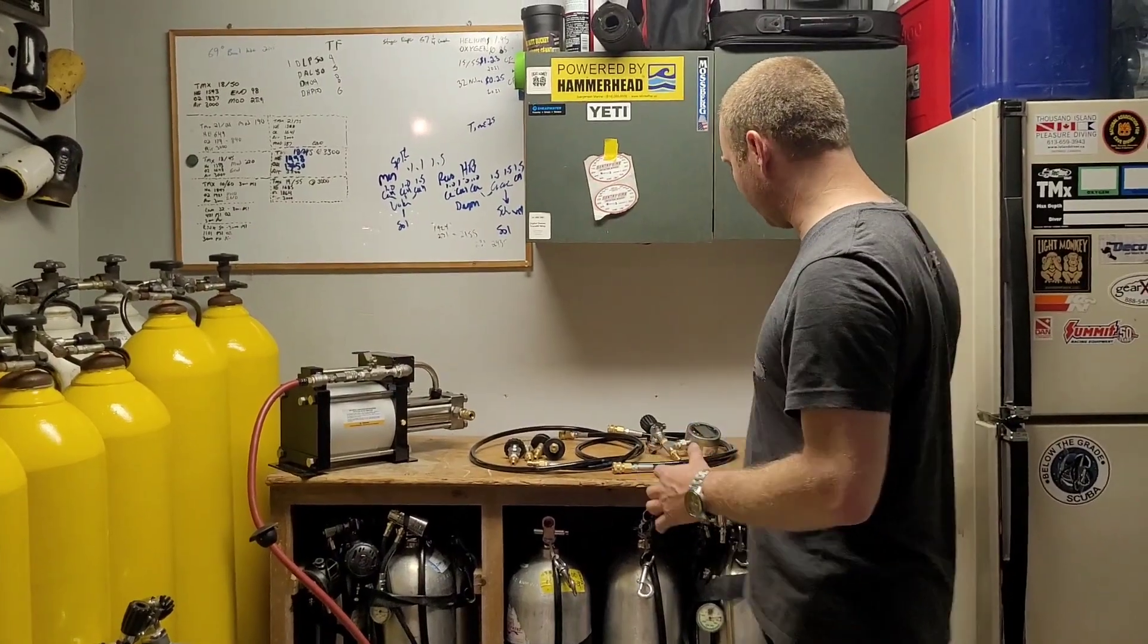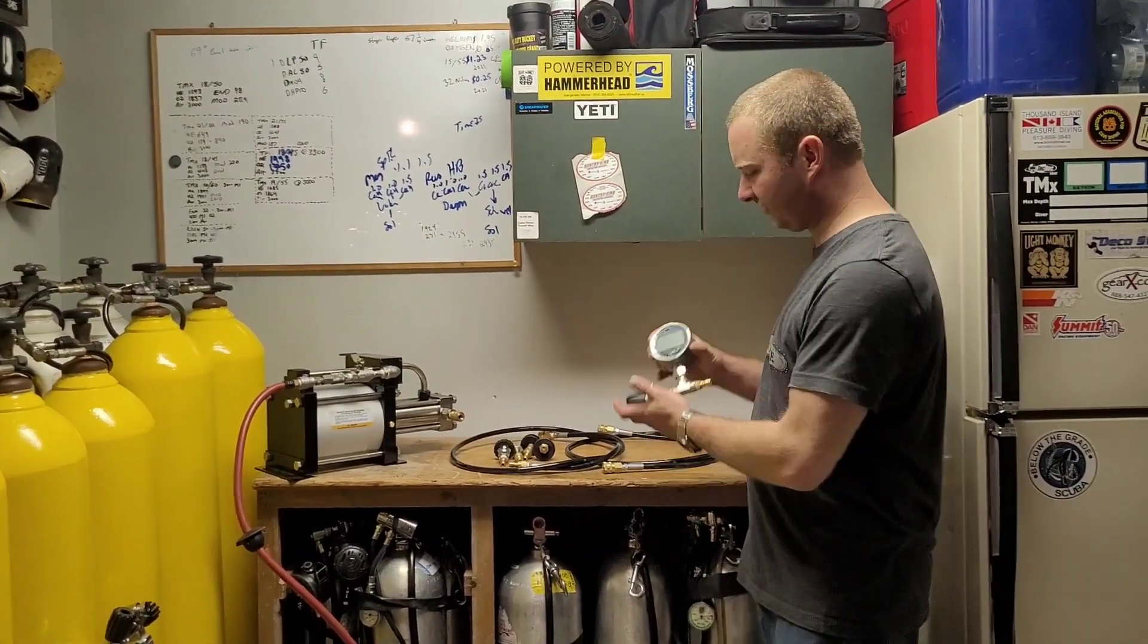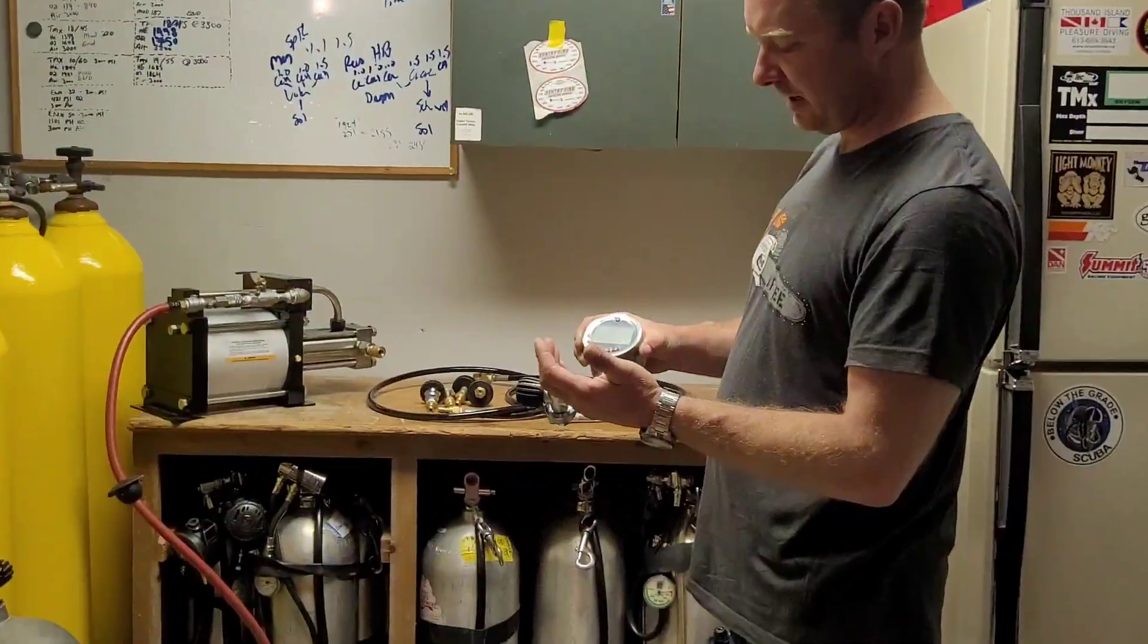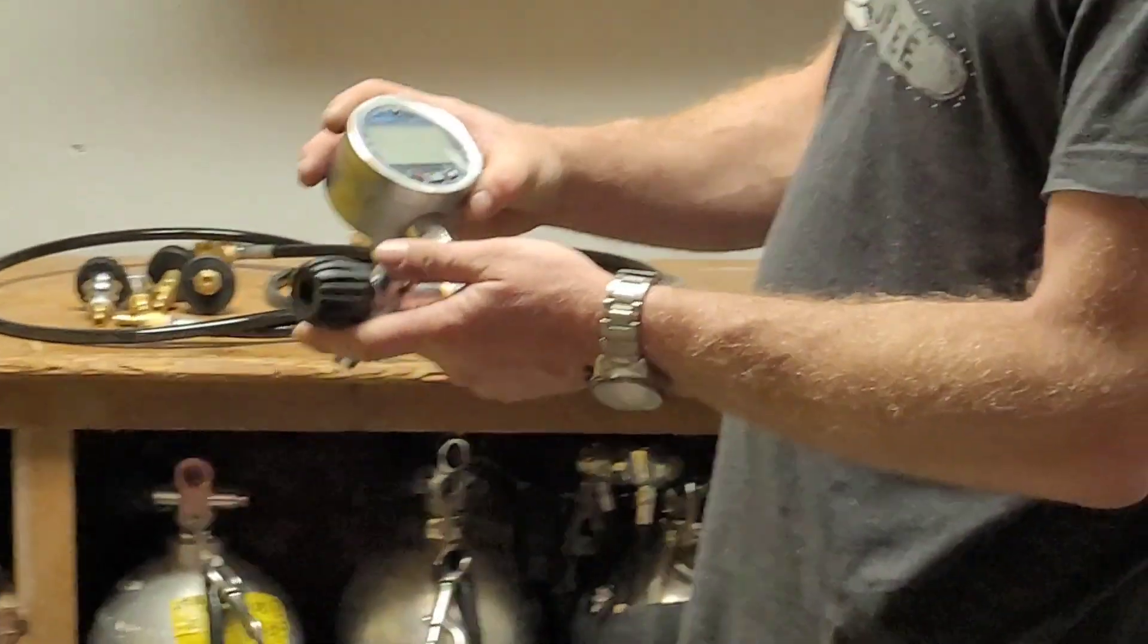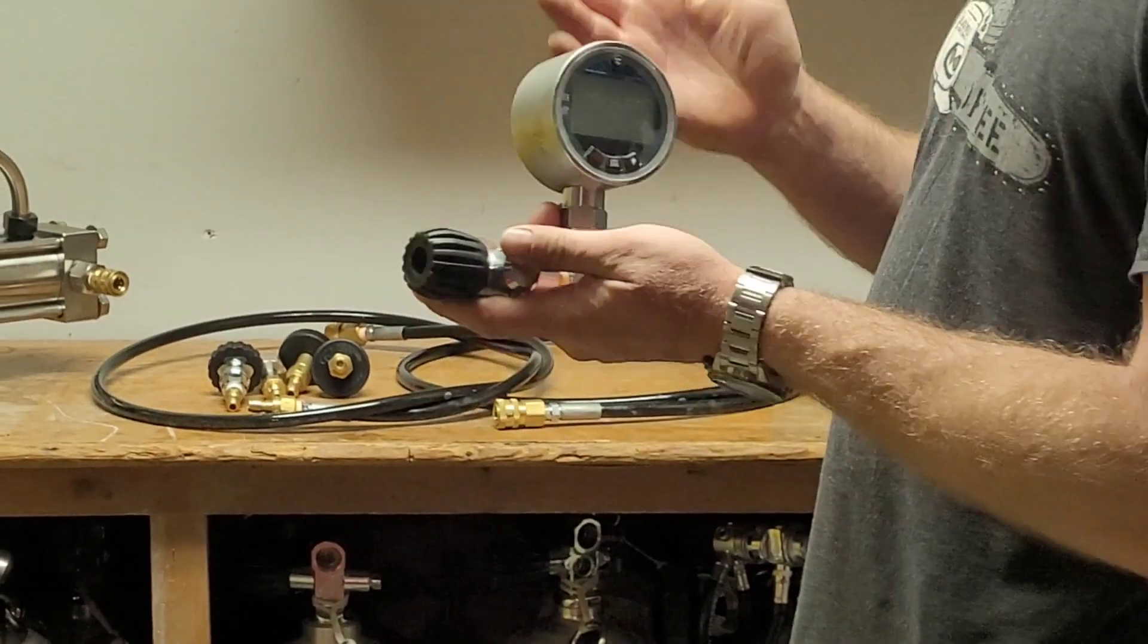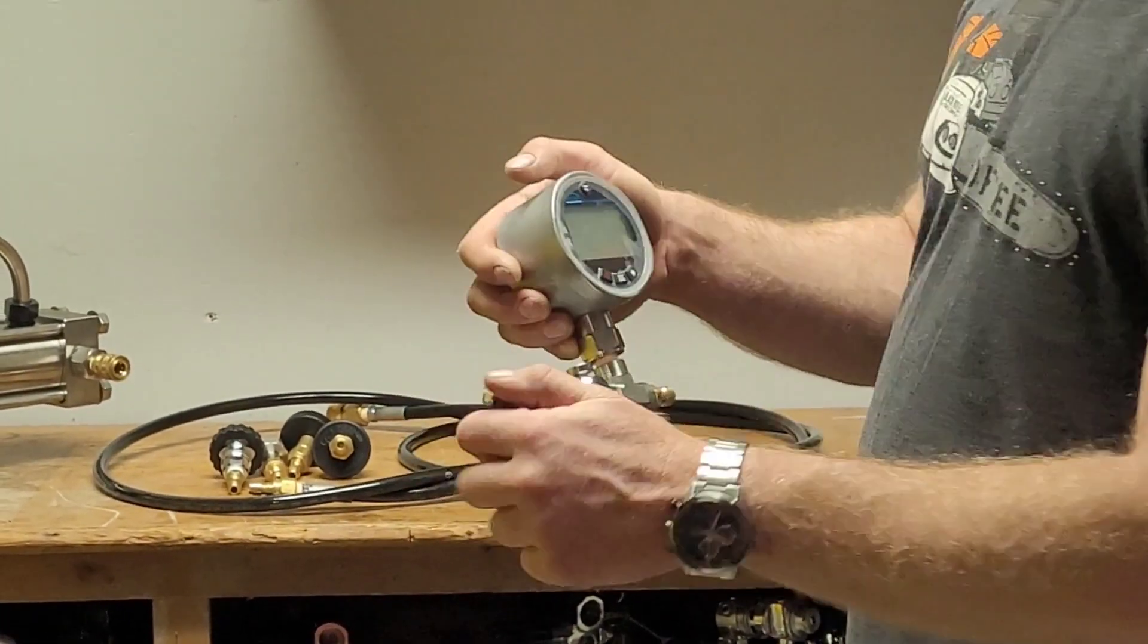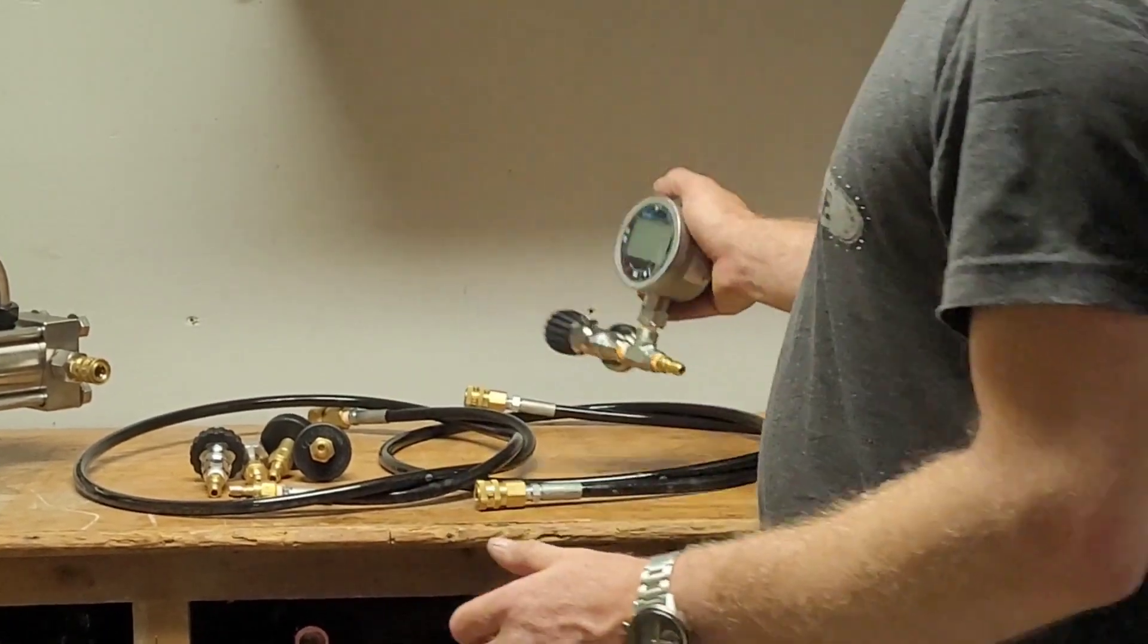So the Master Blender Kit, we've done a video on this before. The heart of the system is this integrated pressure gauge and DIN fill. This is your supplier. This is where you're going to send your gas through. It's got a ball valve at the end. We're going to show you that.